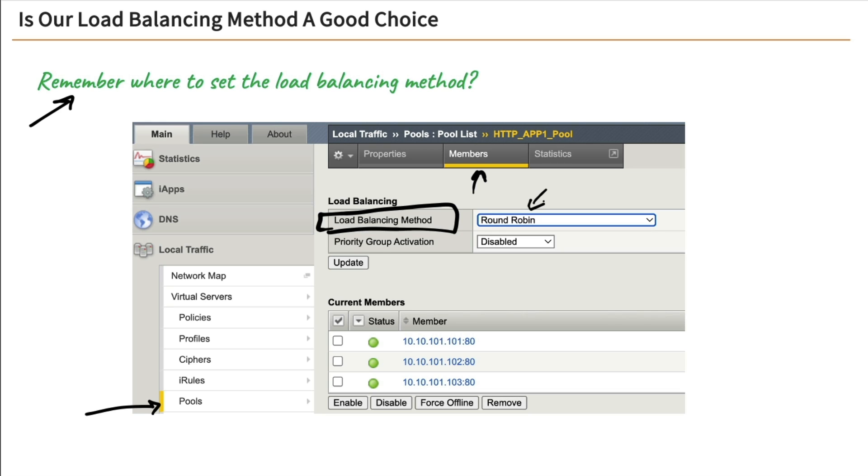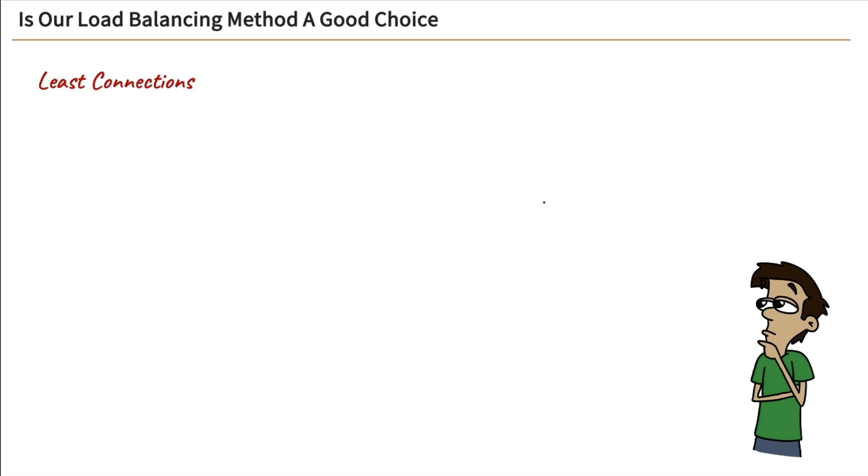Let's talk about some dynamic load balancing options, such as least connections. So when we have our client over here, our big IP over here, and our pool members over here, we're going to be load balancing based on the least number of connections.